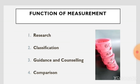Now the topic is functions of measurement. The first function is research — through research we can find out the measurement of an individual. Measurement is also used in research; Asthana and Agarwal wrote that tests are extensively used in research, given to control and experimental groups. The second function is classification. The third is guidance and counselling, and the fourth is comparison.